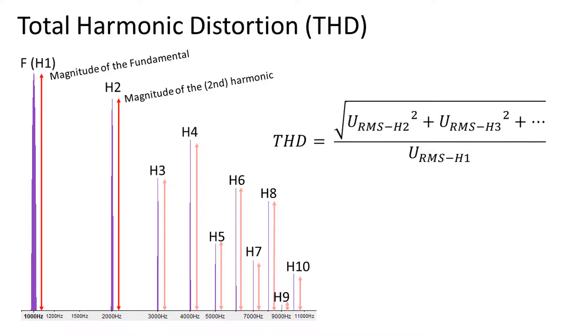So all the harmonics get summed by the square of the RMS voltages, and then the square root is taken of that sum. And this gets divided by the RMS voltage of the fundamental. Now let's try this out in LTSpice.